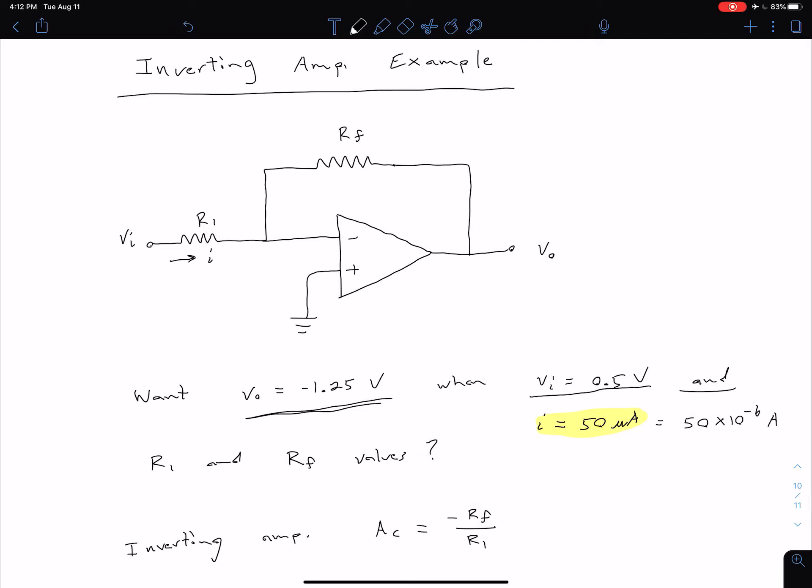So we have a virtual ground at this point here. So really all along this whole node, which is connecting to our inverting terminal. So we know V equals zero here, so we could define this voltage as VI.